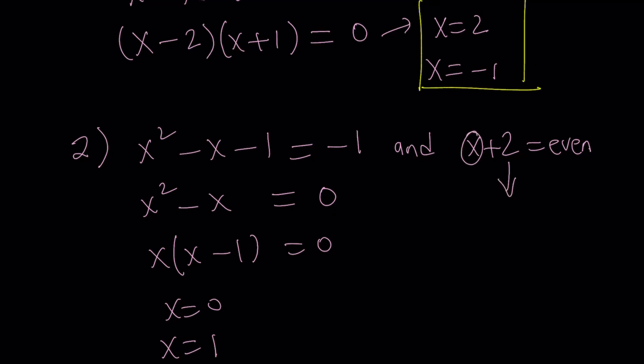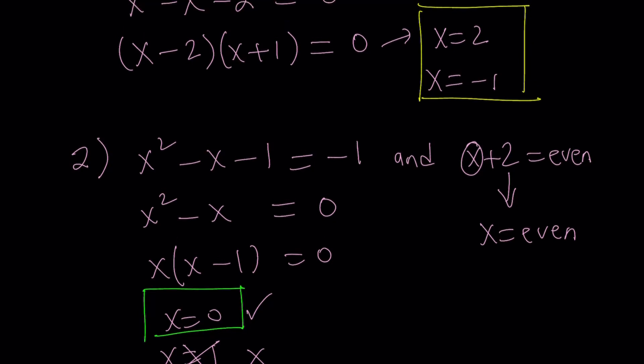Now, we're going to go ahead and check our first findings with the second criteria. Is 0 even? Yes. Is 1 even? No. So we're going to discard it. We can't take an uneven number. So we're going to go with x equals 0 only. So far, it looks like we have three solutions. x equals 2, x equals negative 1, and x equals 0. Let's see if we're going to get more.